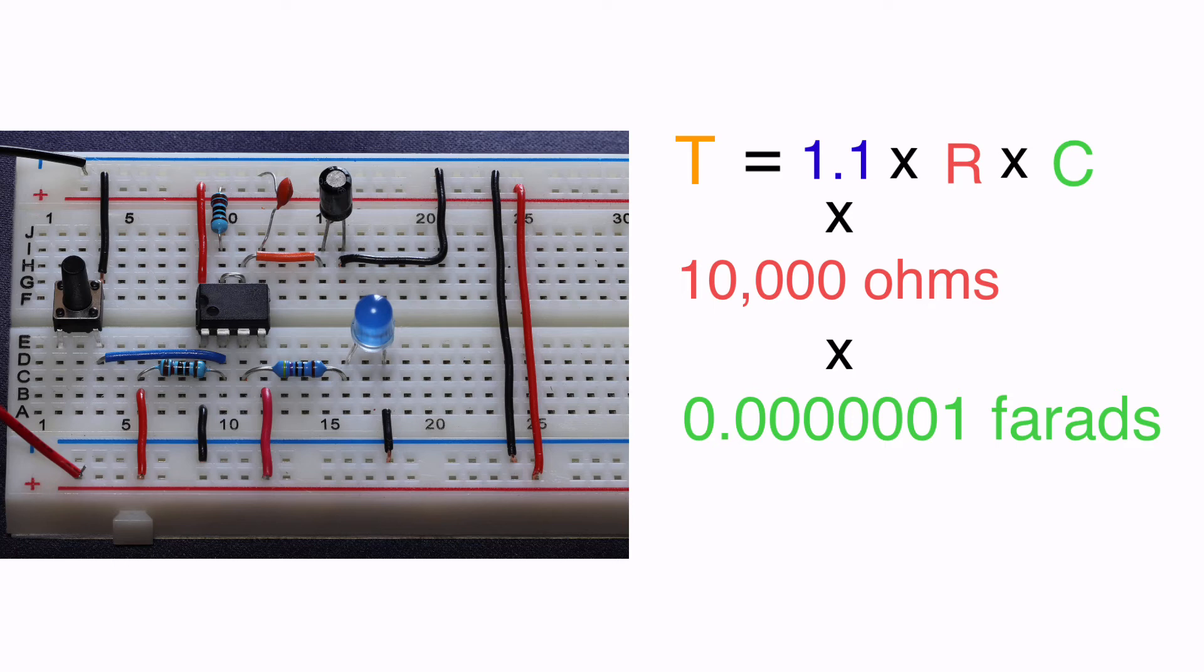So if we do the math, it's 1.1 multiplied by 10,000 multiplied by 0.0000001 farads, which gives us a time interval of 0.0011 seconds.